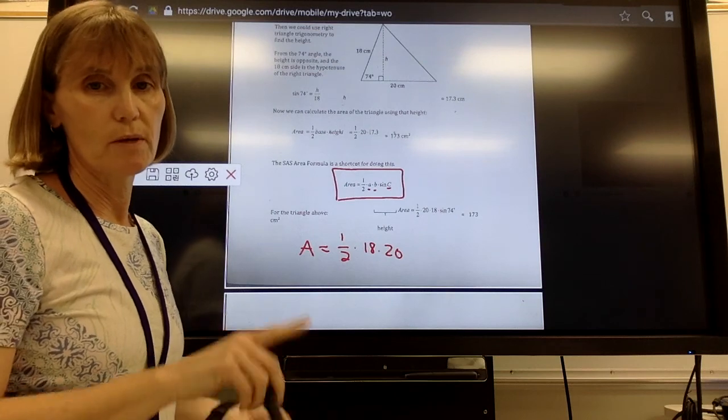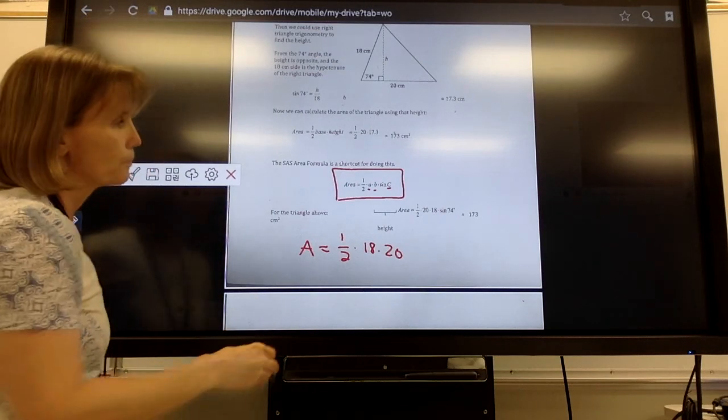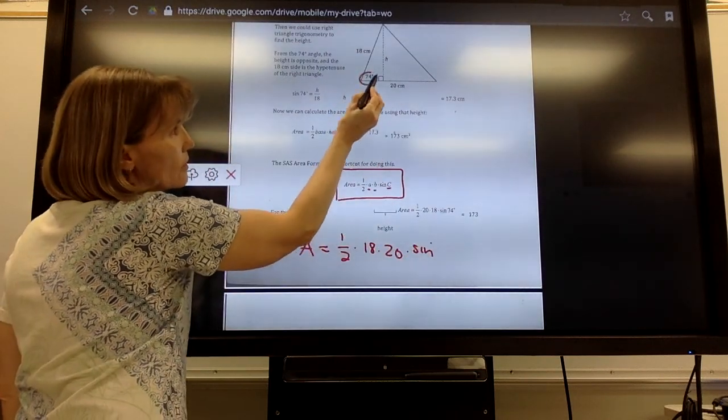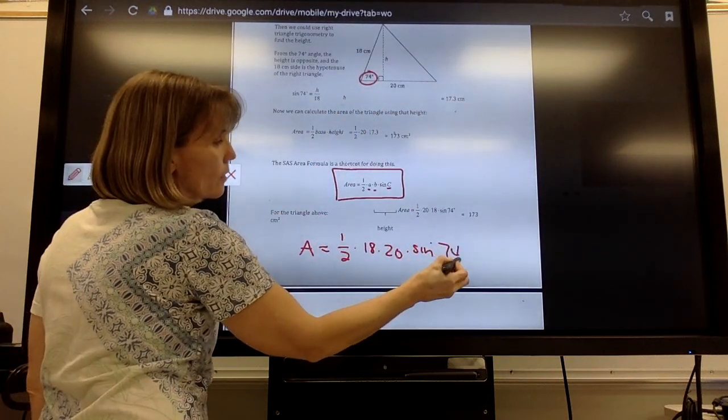And it does not matter which one's A and which one's B. You can interchange those as well. And then I'm going to take it times the sine of angle C. Angle C is the angle that I'm given.